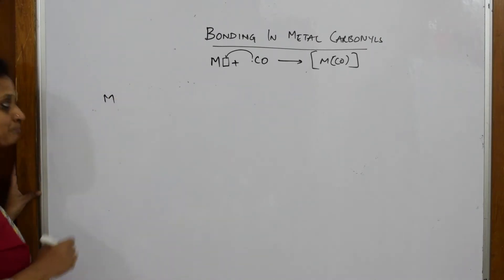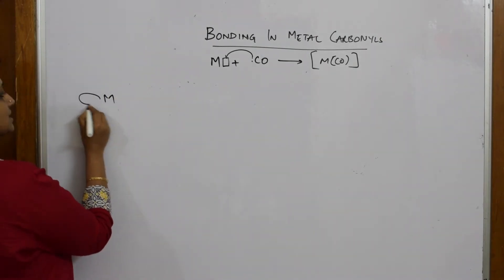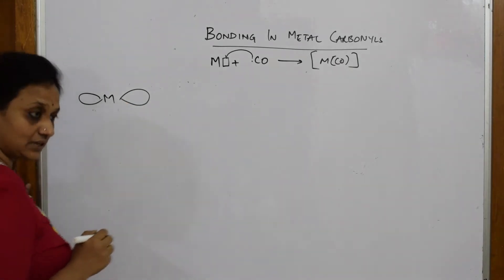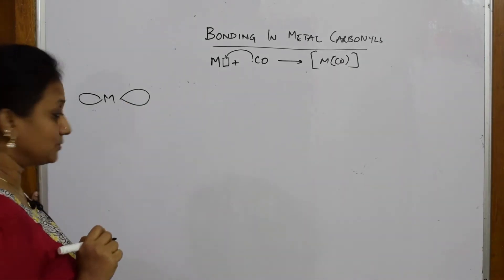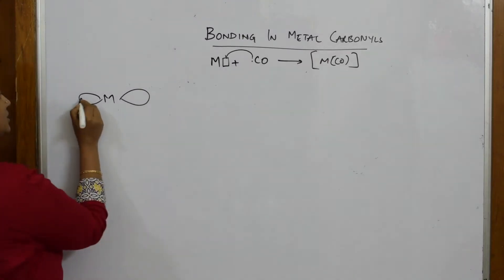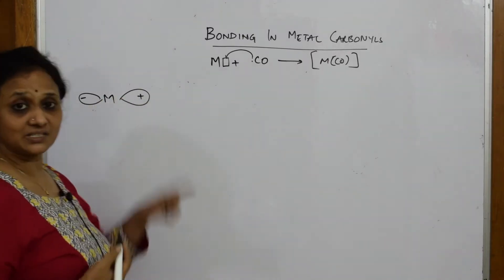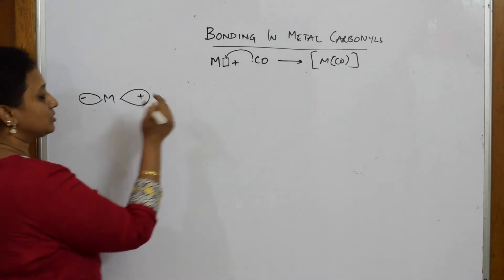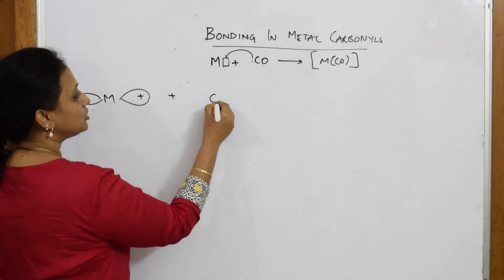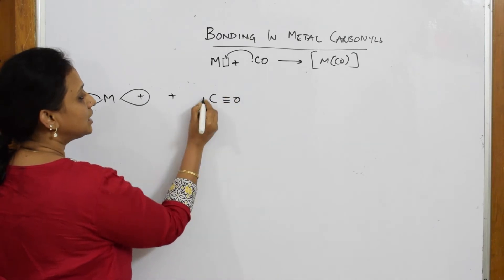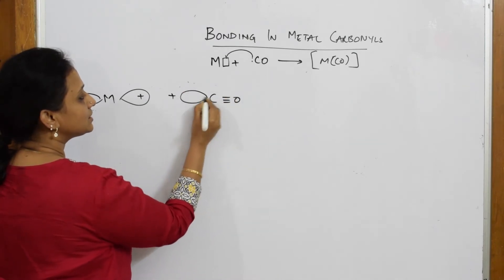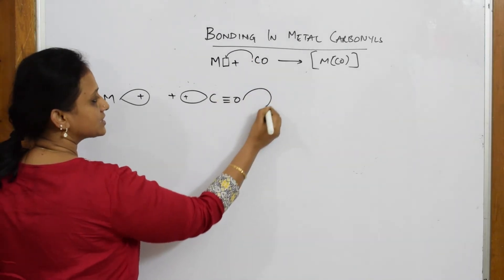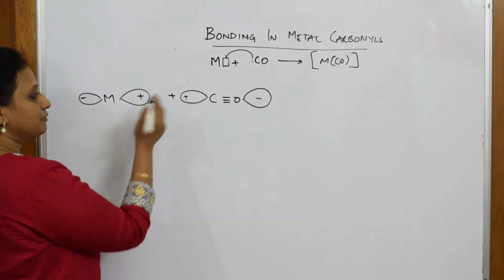The transition element metal has a vacant d orbital. Whenever you're writing such things, be very careful with the signs. This metal, with its orbital, is going to combine with your carbonyl group, which has a lone pair of electrons. These are the lone pair of electrons — that's the first important thing.